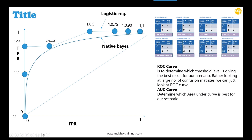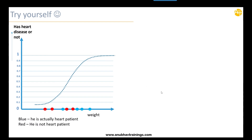The ROC curve, based on different threshold levels, provides you the best result for your scenario. Rather than looking at a large number of confusion matrices for every scenario and every threshold, you use a simple curve that the computer plots for you, and then you can decide which model is best for your requirement. You also have AUC — Area Under Curve — and the higher the area under the curve, the better the model. In Python we will apply logistic regression, as it is one of the best models for classification problems.